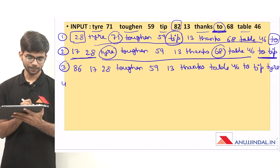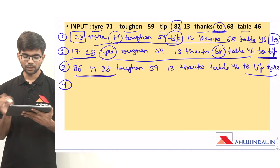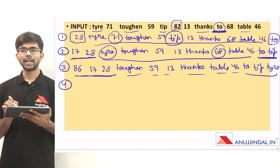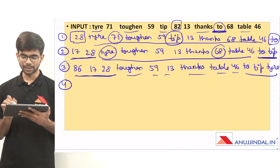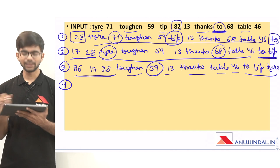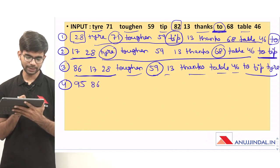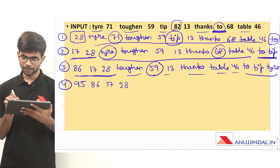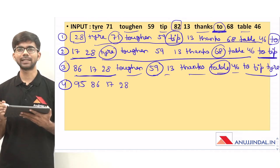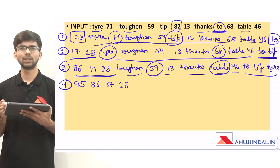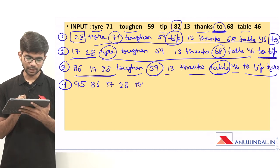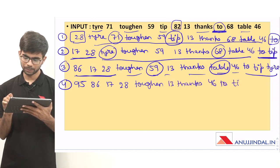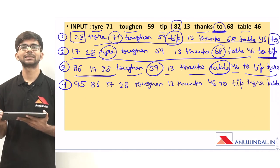Now step 4. From the remaining three numbers, the largest is 59. Reversing 59 gives 95, which moves to the front. From the remaining words, 'table' has the fewest letters with five letters, so 'table' moves to the last. Step 4 is: 95, 86, 17, 28, toughen, 13, thanks, 46, 2, tip, tire, table.